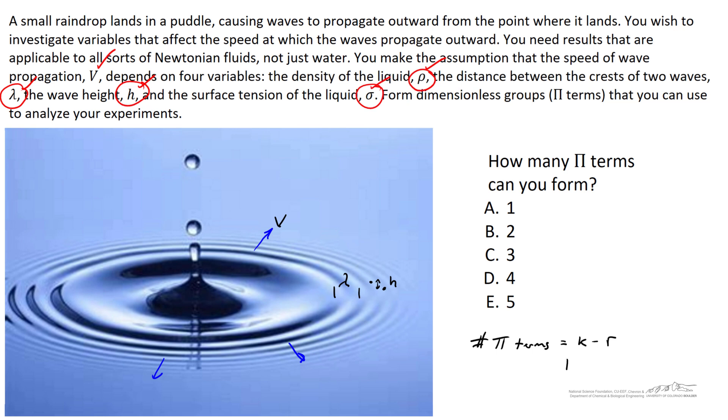So k is equal to 5, and r is the number of dimensions that we need to characterize this. And r, in this case, is equal to 3. We've got mass, length, and time. So 5 minus 3 is equal to 2 pi terms.